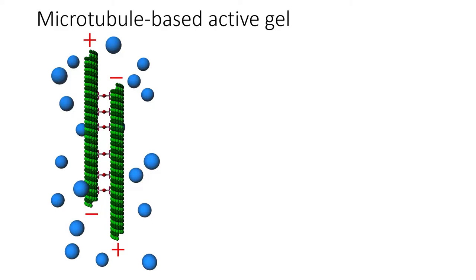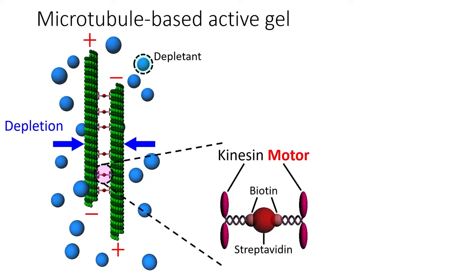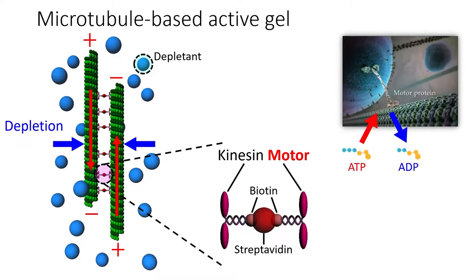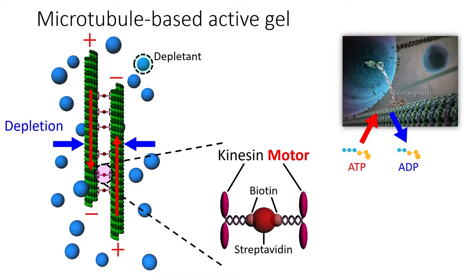In this active fluid system, there are three major components. The first component is microtubules, illustrated as green rods in the schematic diagram. We extracted and purified tubulins from bovine brains and polymerized them to get microtubules. The second component is depleting polymers, which induce depletion forces to bundle microtubules. The bundled microtubules will then be bridged by our third component, kinesin motor dimers, which drive apart pairs of anti-parallel microtubules, causing interfilamentous sliding. This is a non-equilibrium process — for the motor to drive microtubules, we need to feed it ATP, which the motor converts to ADP. So ATP is the fuel in this active fluid system.